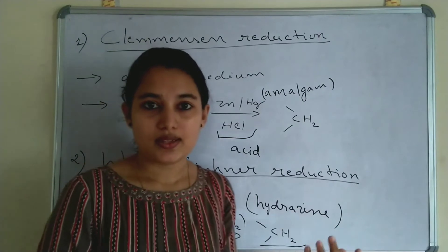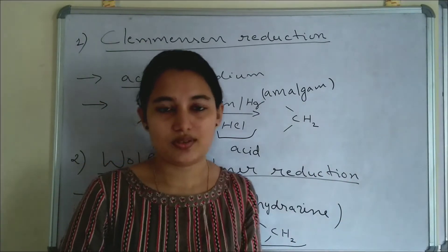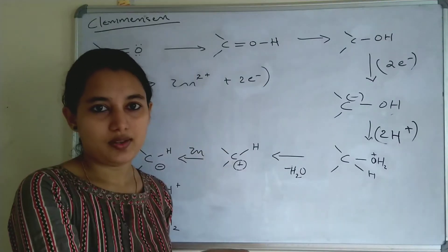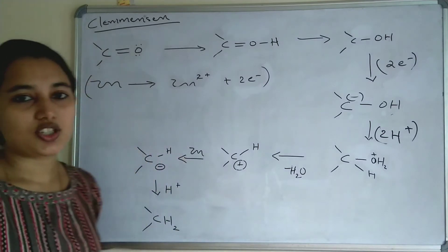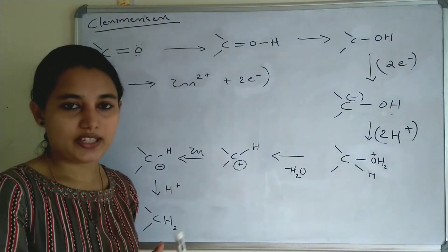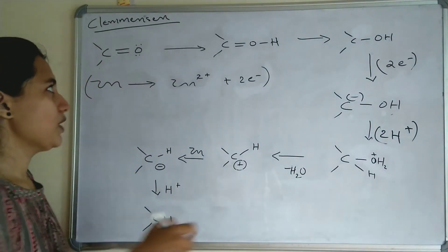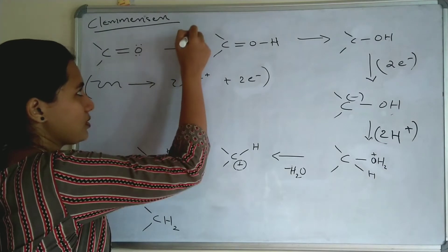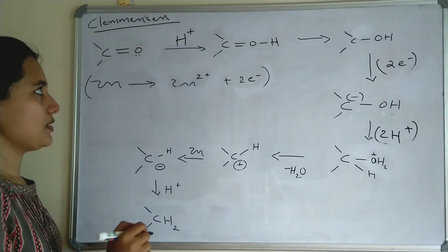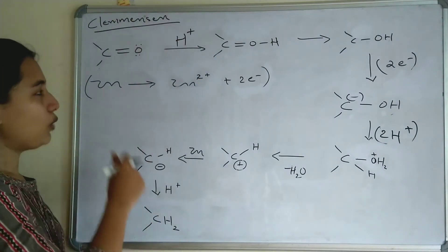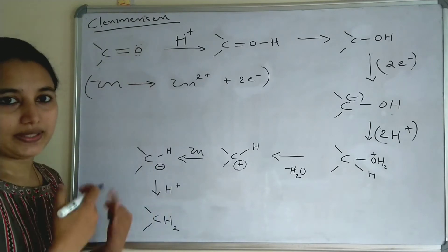Now let us see the mechanism of these two reactions. This is the mechanism of Clemmensen Reduction, which takes place under acidic medium. So there is H⁺ present. A carbonyl compound — which can be an aldehyde or a ketone — is taken.